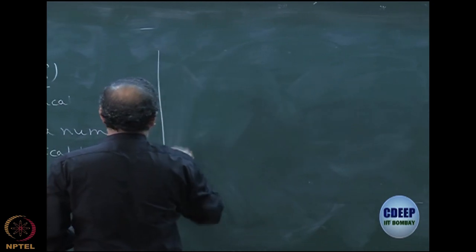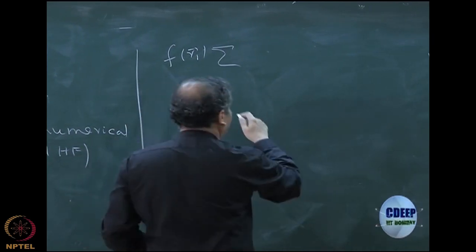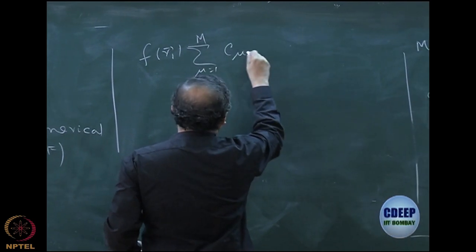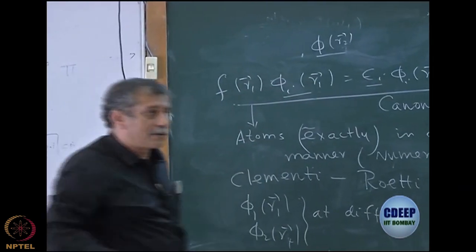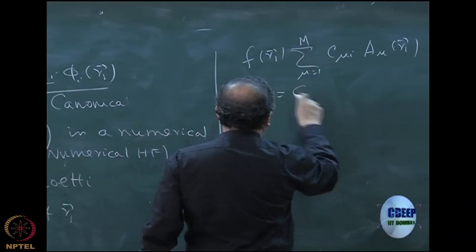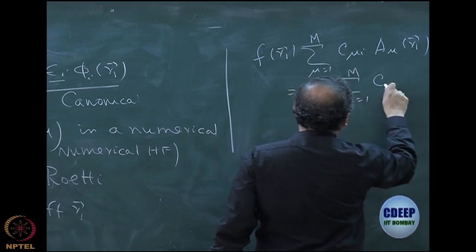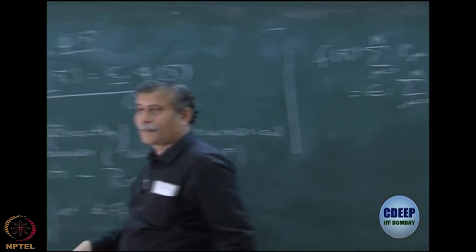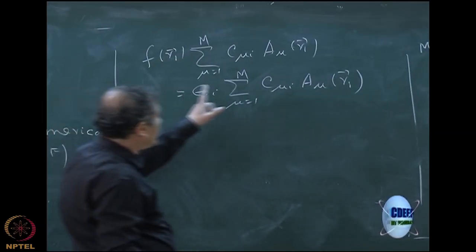What Roothaan did was to substitute sum mu equal to 1 to capital M, C mu i A mu of R1. Just see what I am doing is putting this expansion for phi i of R1 both on the left and the right-hand side. Equal to epsilon i sum over mu equal to 1 to M, C mu i A mu. Of course this R1 can be R2, it can be R, does not matter. It is a one electron dummy variable, this R1.